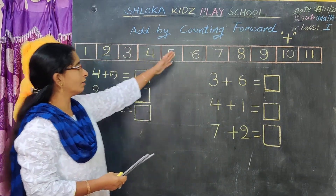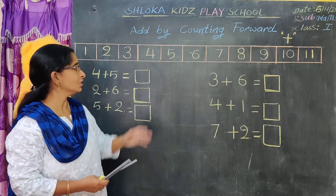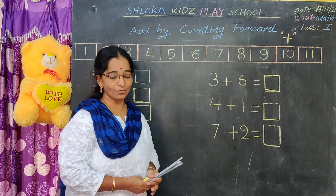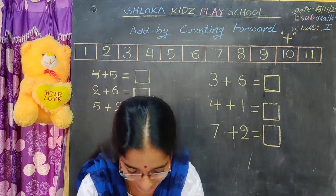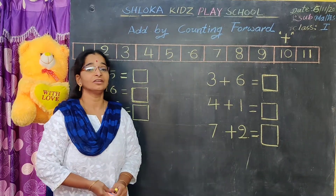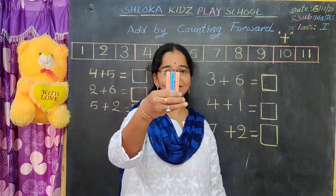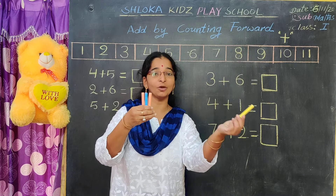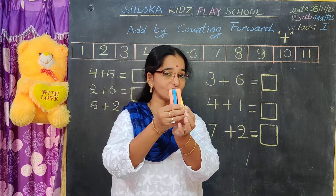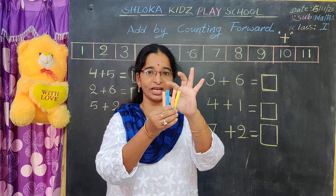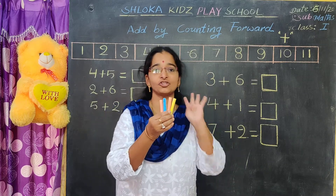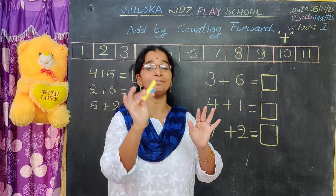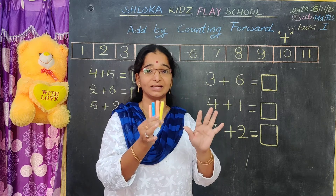So now we know how to add by counting forward. One more example: I am having three chalk pieces with me. You gave me one more chalk piece. So how many chalk pieces does it become now? One, two, three, four. All together four chalk pieces. That means we are counting. Counting the numbers is nothing but the addition.